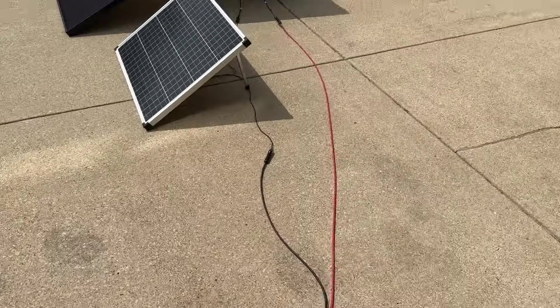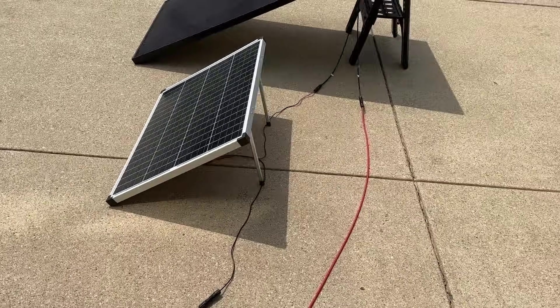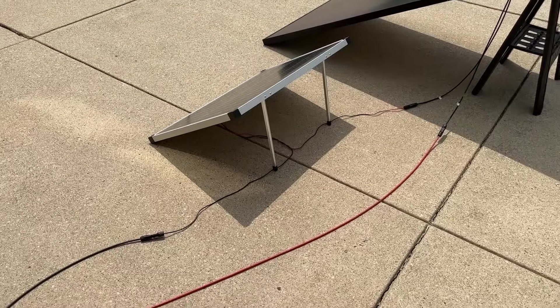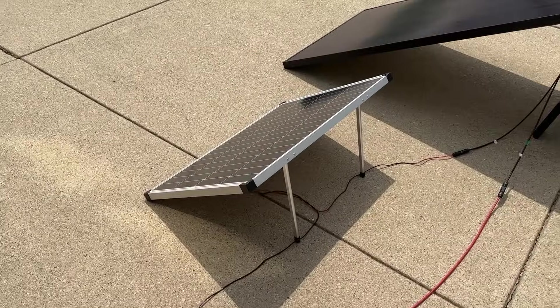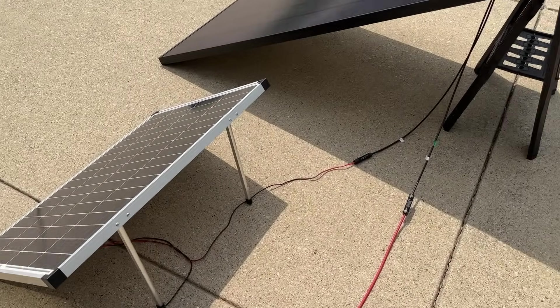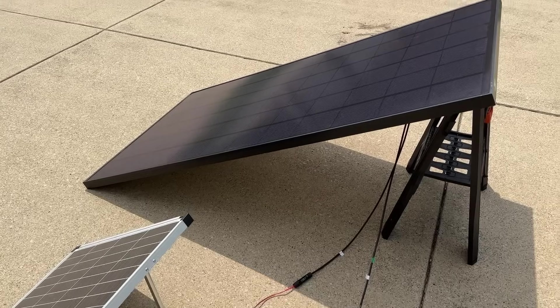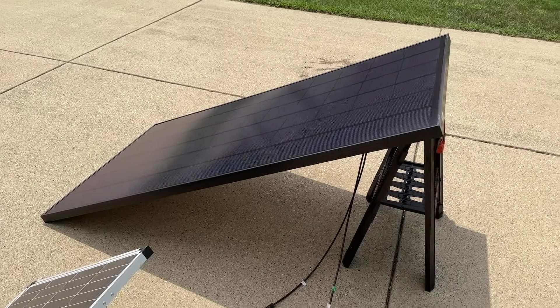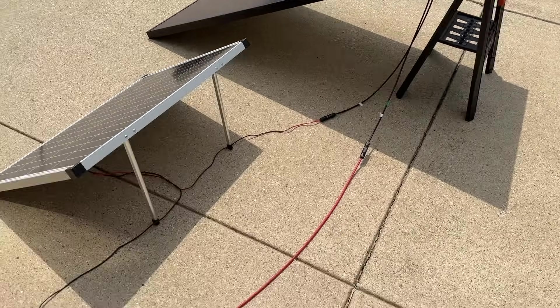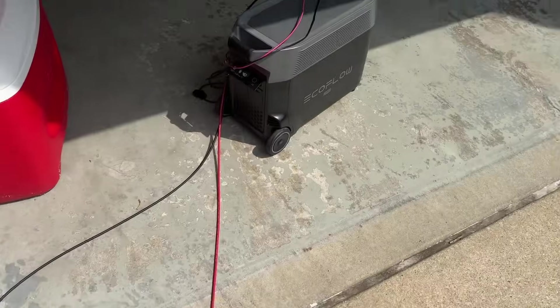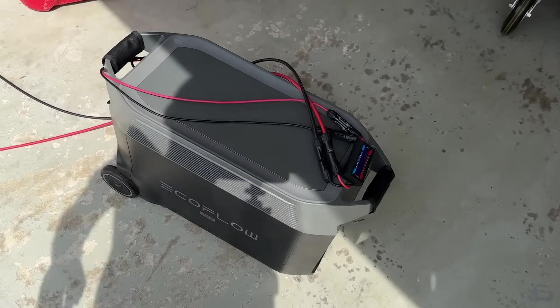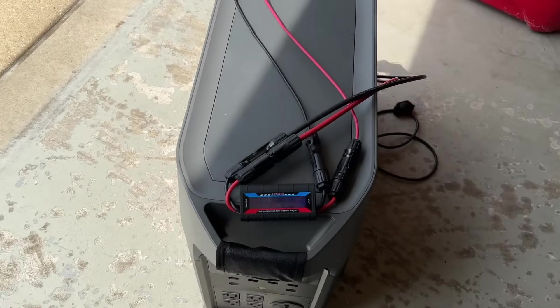Let's take one more data point and that is just wiring these together in series. Now remember I said it's not that easy and this will kind of prove out the point for us. We have our negative coming from the 100 watt panel, then we have the positive from 100 watt going to the negative of the 360 watt, and then the positive from the 360 watt completing the circuit over to the EcoFlow Delta Pro. Just a simple wiring in series of the two mismatched panels.